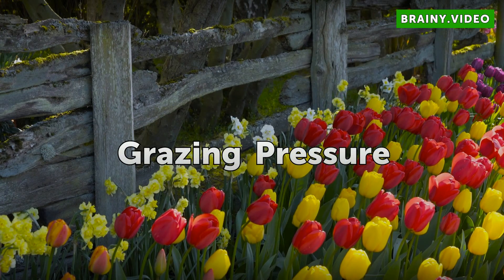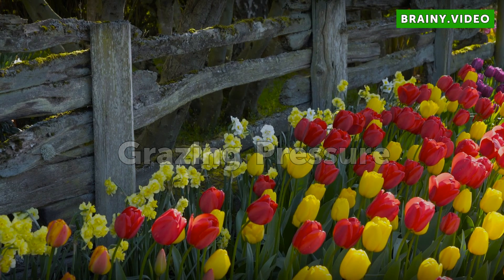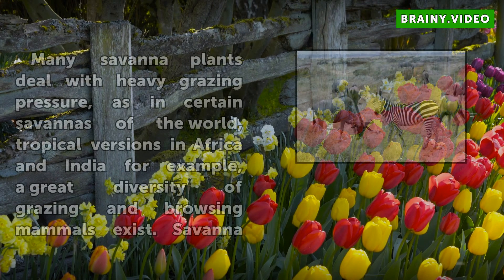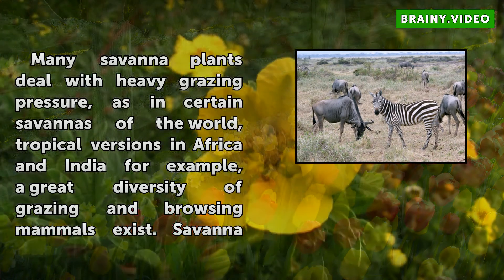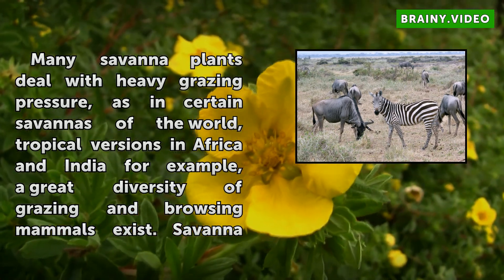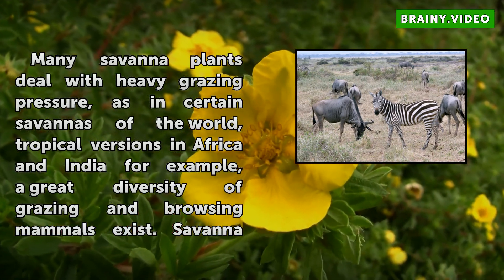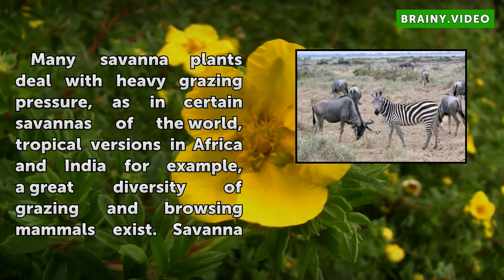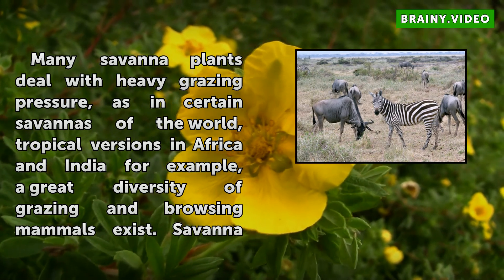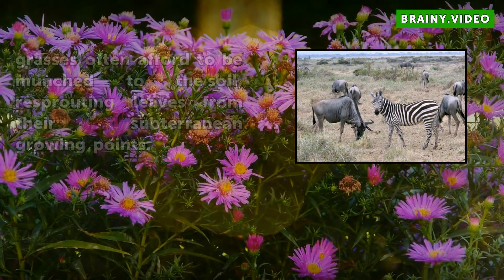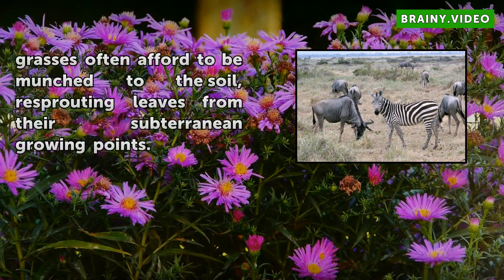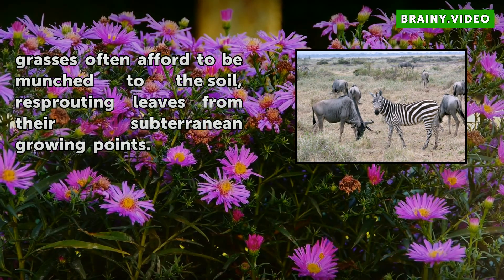Grazing Pressure. Many savannah plants deal with heavy grazing pressure, as in certain savannahs of the world — tropical versions in Africa and India, for example — a great diversity of grazing and browsing mammals exist. Savannah grasses can afford to be munched to the soil, re-sprouting leaves from their subterranean growing points.